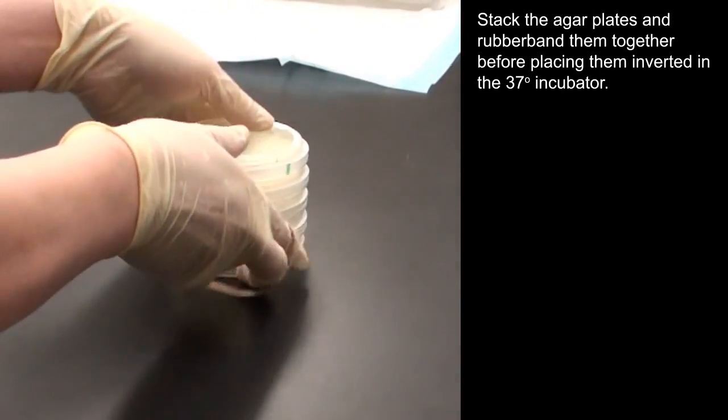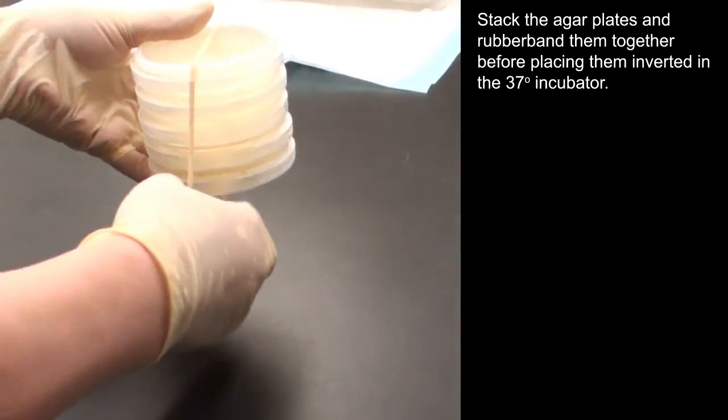Stack the agar plates and rubber band them together before placing them inverted in the 37 degree incubator.